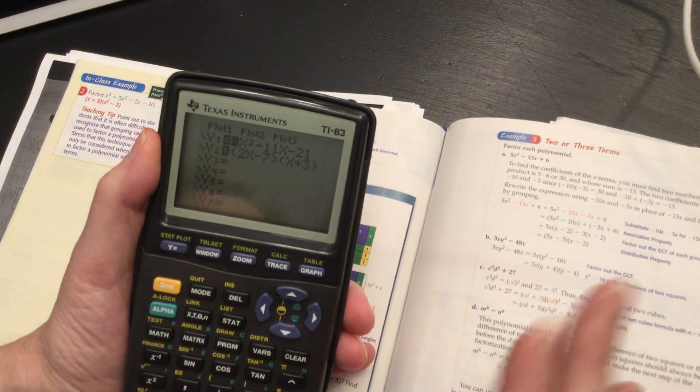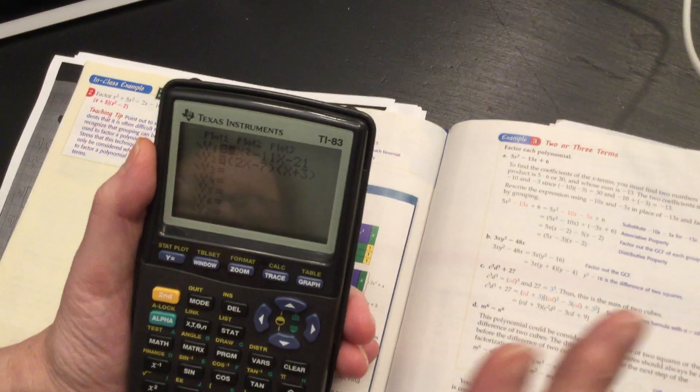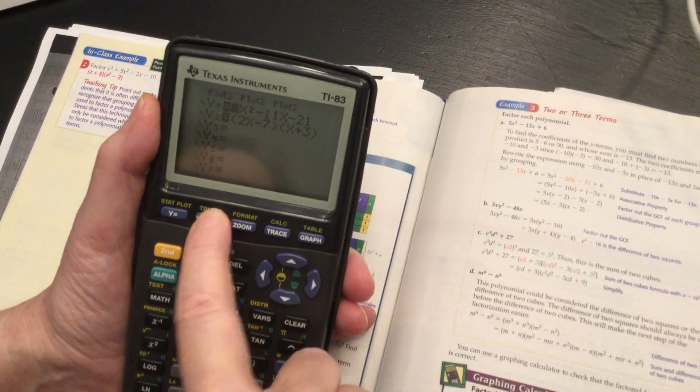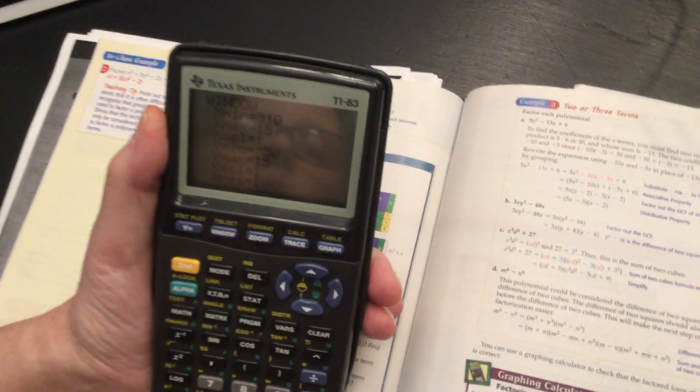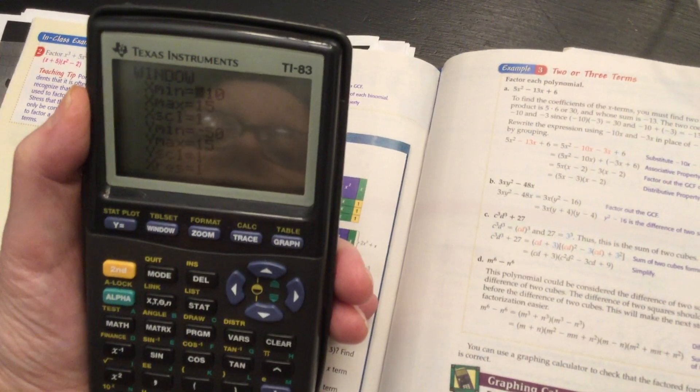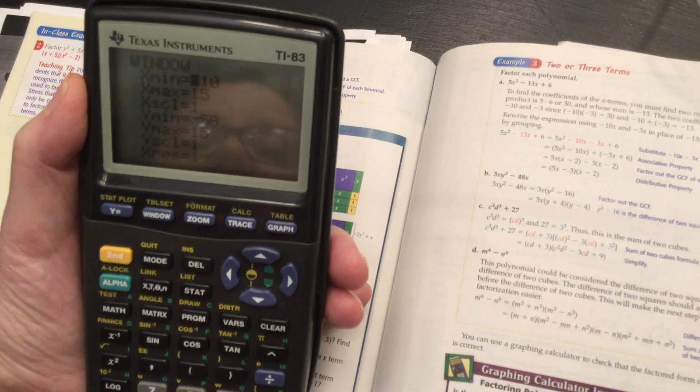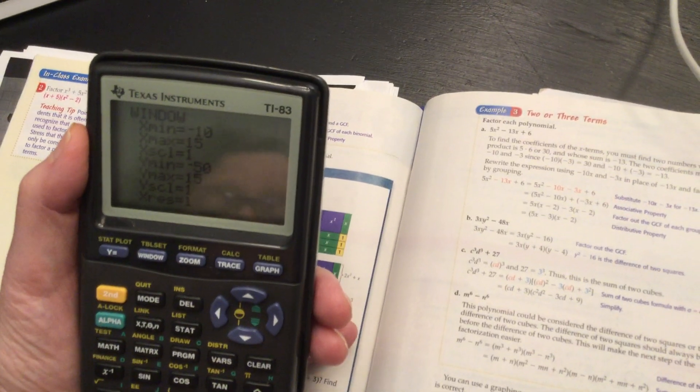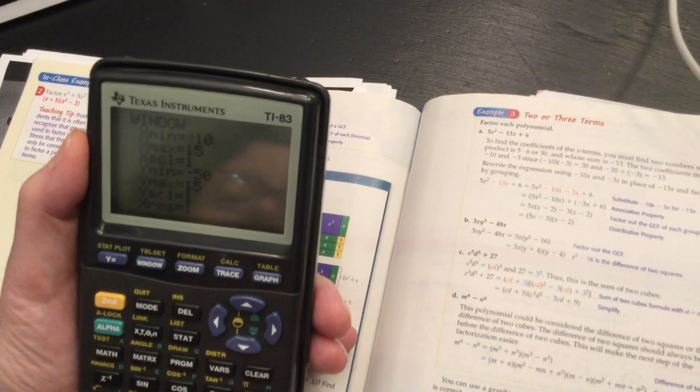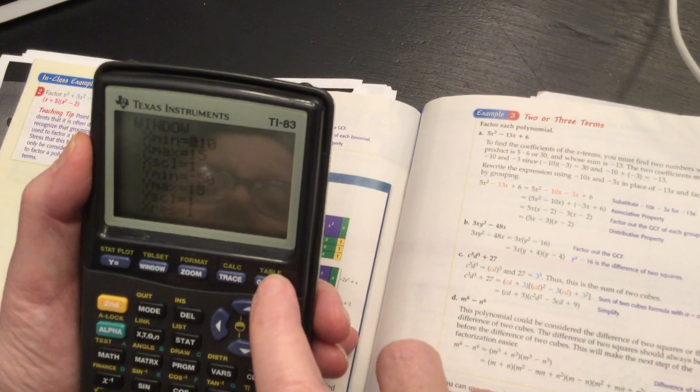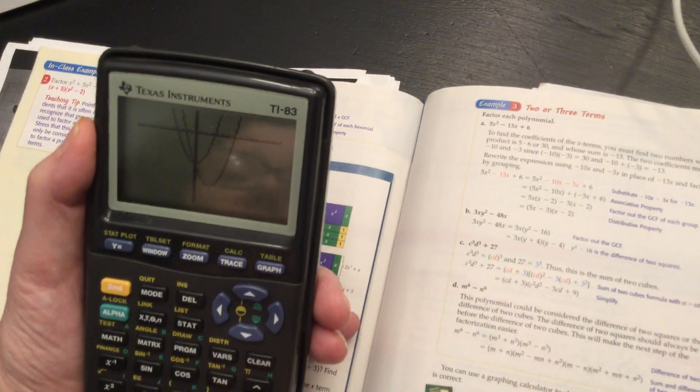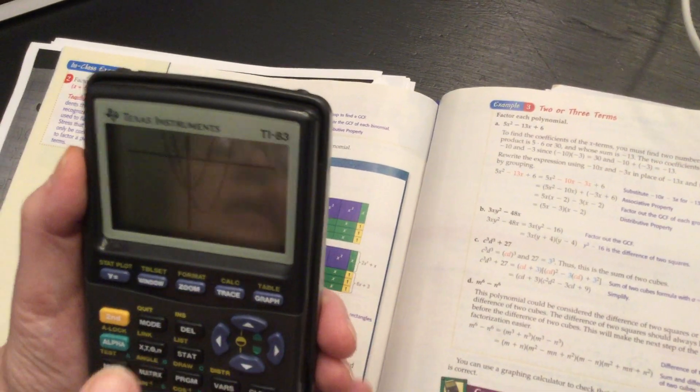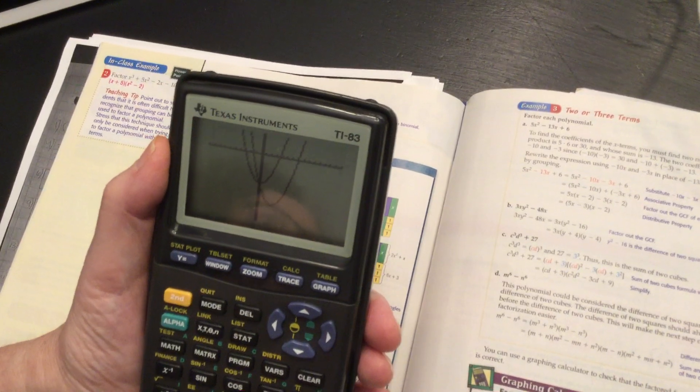Before we graph it, we have to set the range. We did this quite a bit. Here, look at the window we're using where x min is negative 10, x max 15, x scale 1, y min negative 50, x max is 15, y scale 1, forget x res, we don't care, and then graph it. So the only tricky part of entering it is playing with your window.